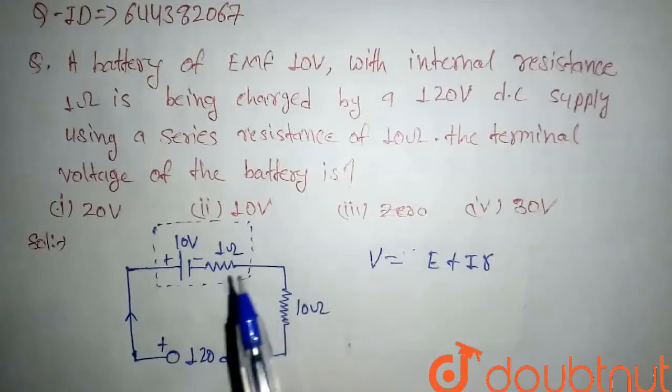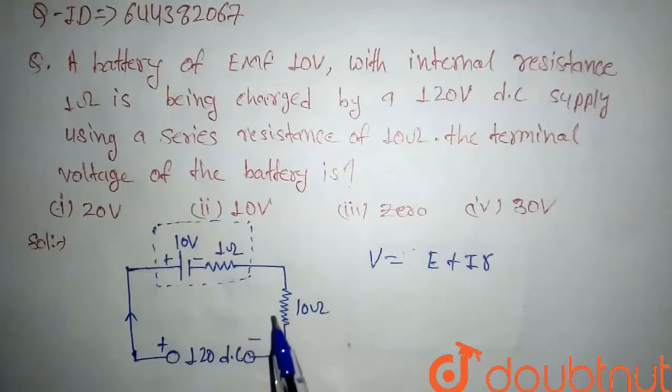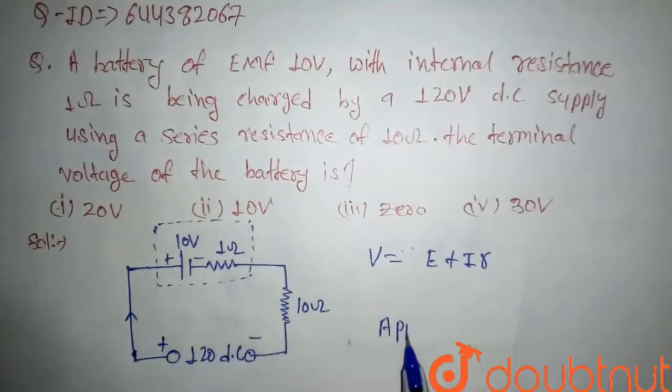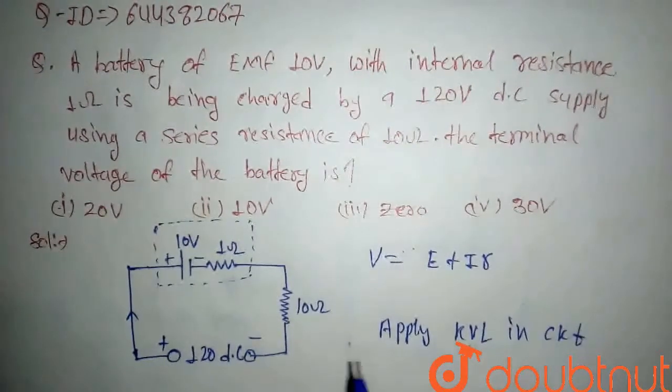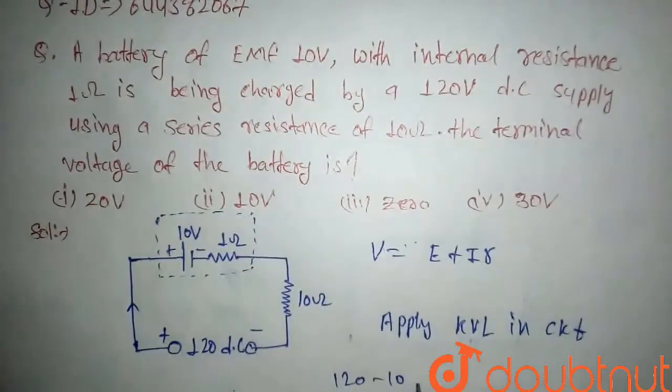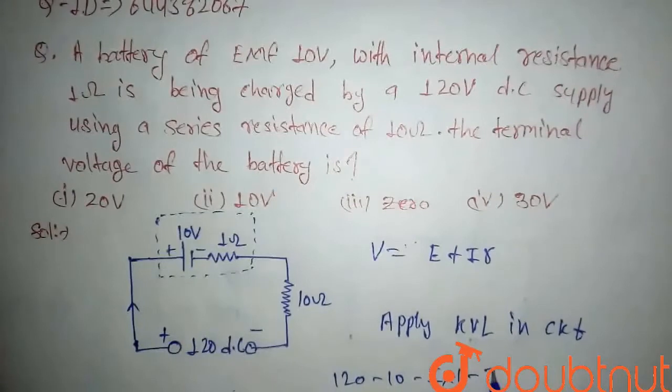If we apply KVL in this circuit, then we will get here 120 minus 10i minus i into 1 minus i into 10 equals 0.